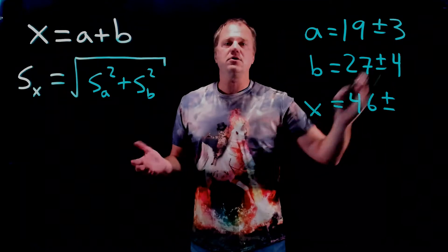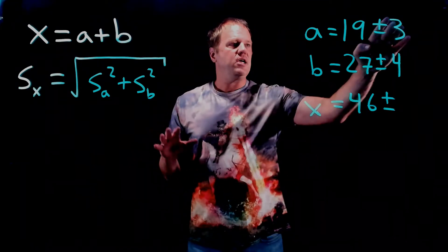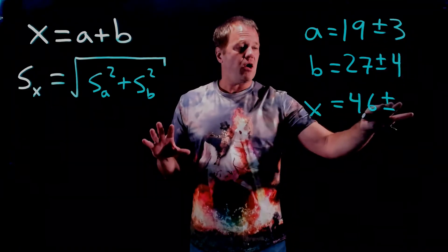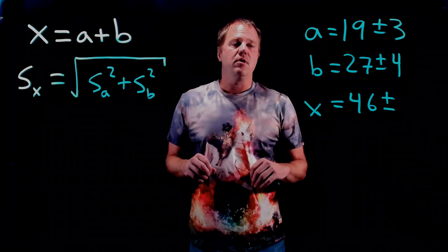Some people will just say add the uncertainties. That's a reasonable approximation. But assuming that each of these uncertainties is uncorrelated, that's actually not quite right. This rule right here is the proper method.